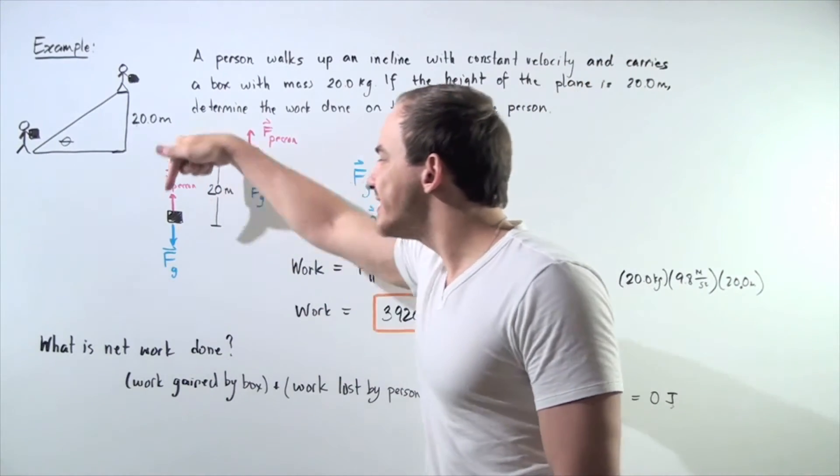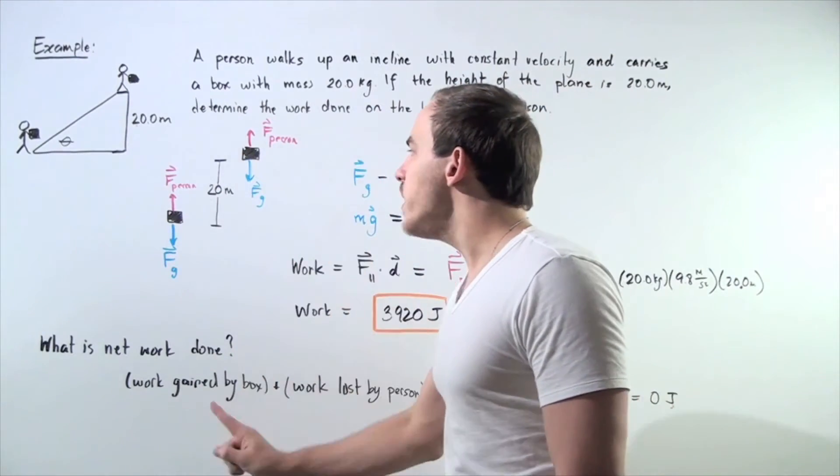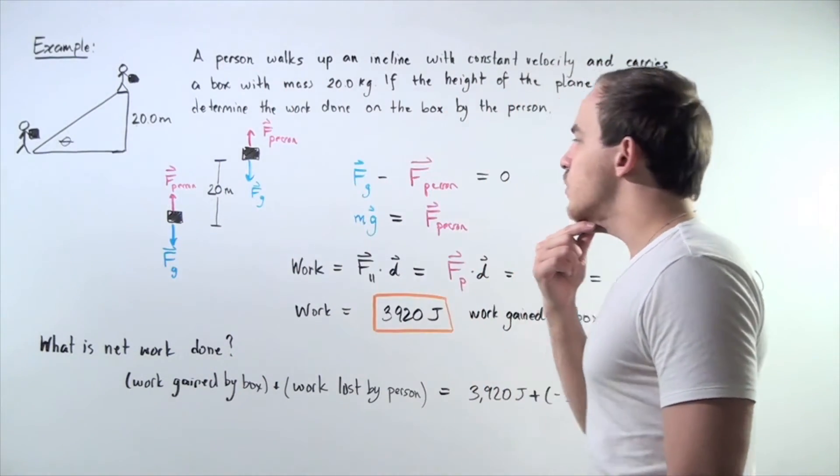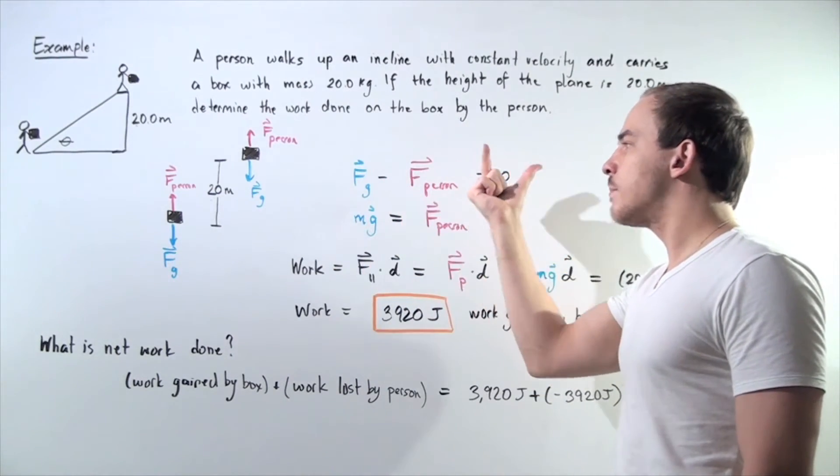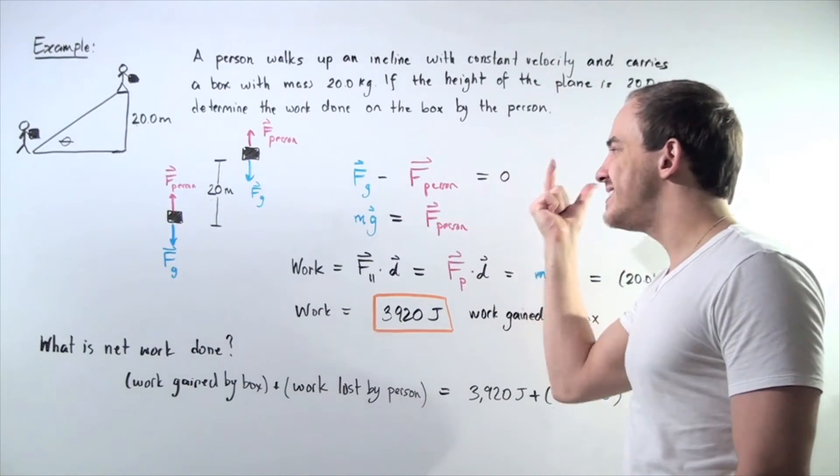Let's choose going downward to be positive, going upward to be negative. That means the force of gravity minus the force created by the person on the box is equal to zero because we have constant velocity and therefore zero acceleration.